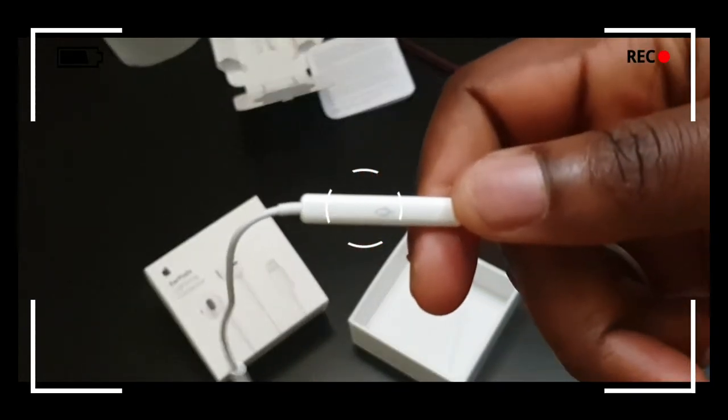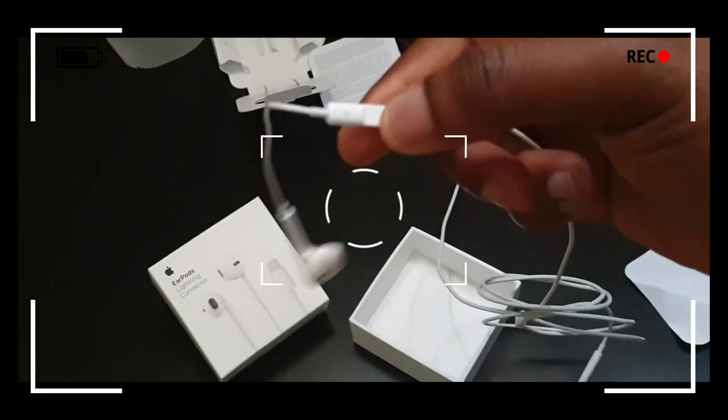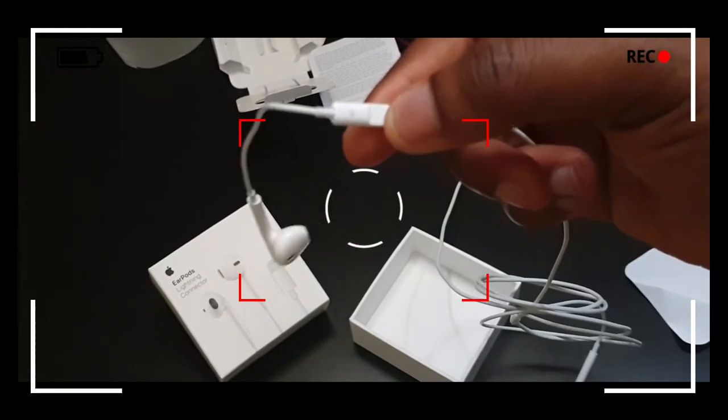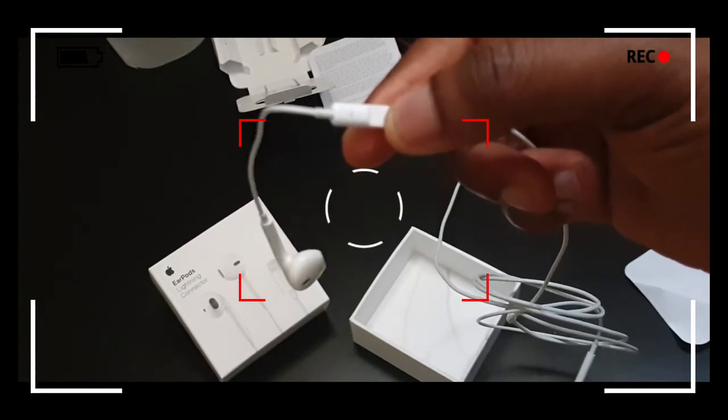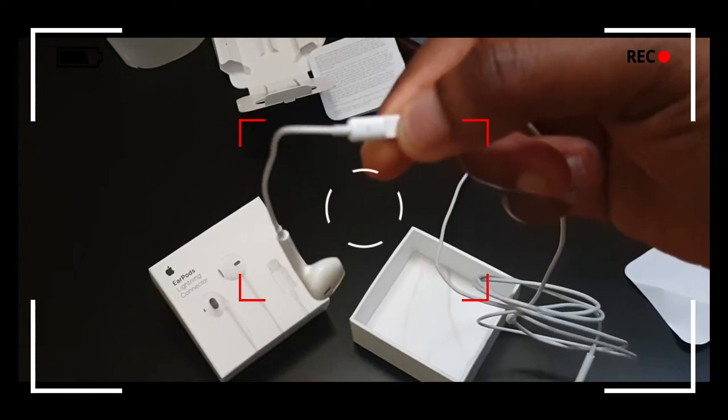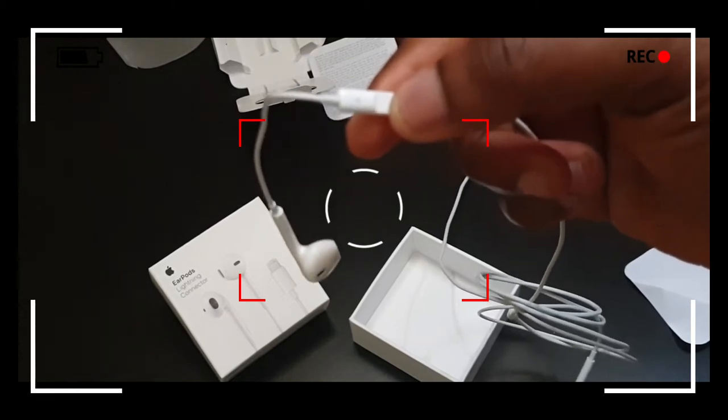If you've got your music player on, with one click of the center button you can play or pause. With double clicks, you can skip to the next song or chapter. With one click and a prolonged click of the center button, you can fast forward.